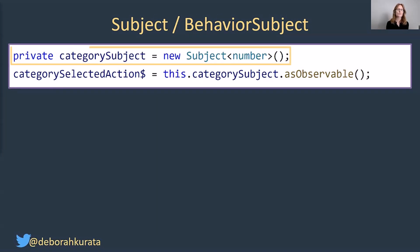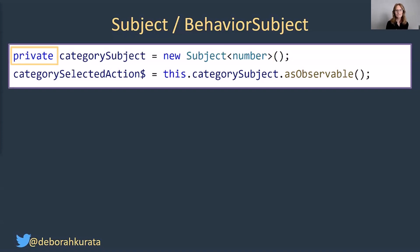That first line is defining a private variable for our new subject, and the generic argument there is defining the type of item that's going to be emitted into that stream. Notice that we have the private keyword on there. We do that because we don't want any other part of the application, any other component or service, to be able to emit values or potentially complete our observable.